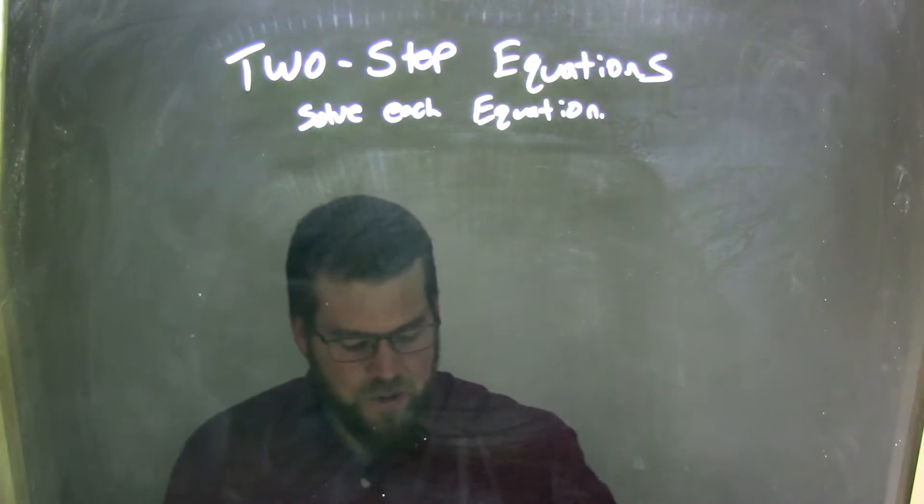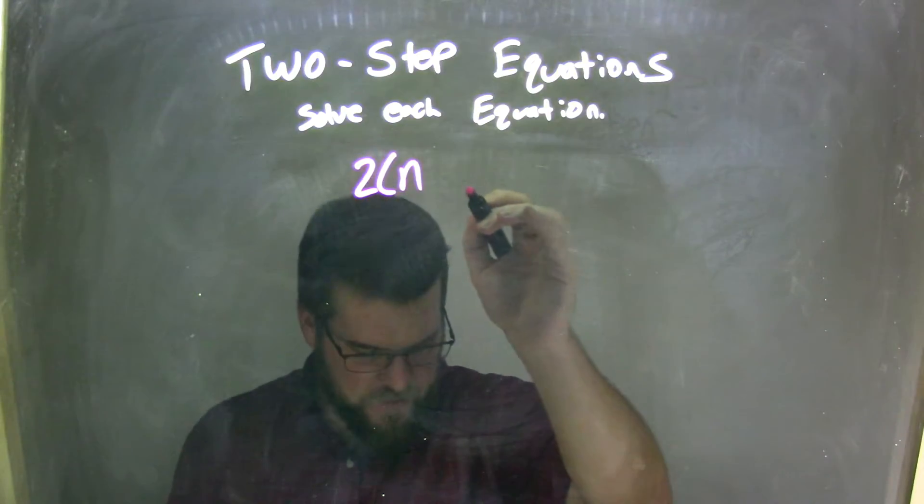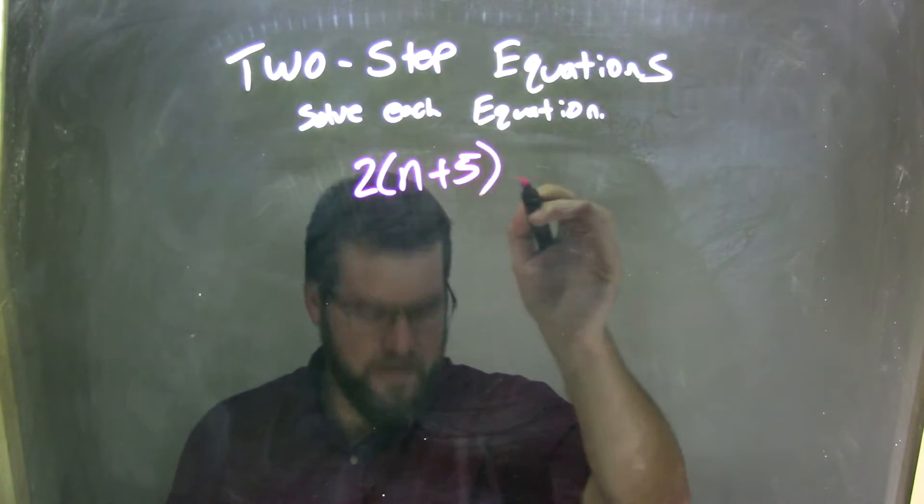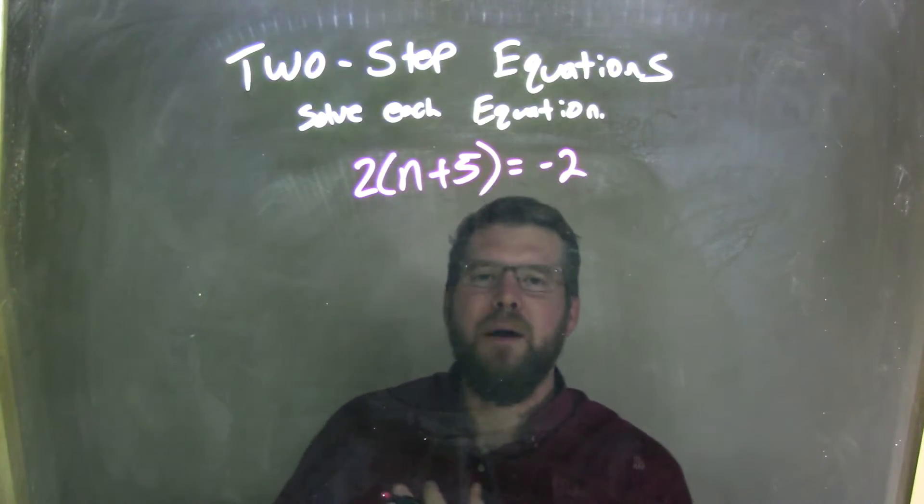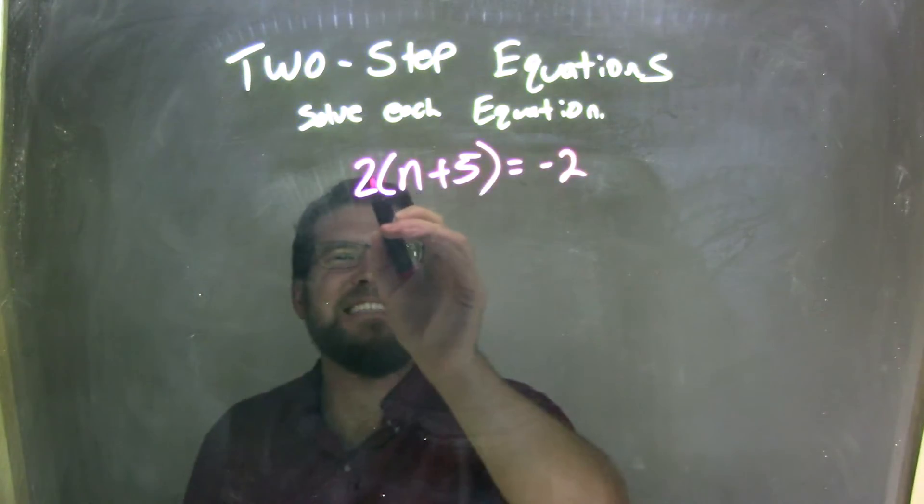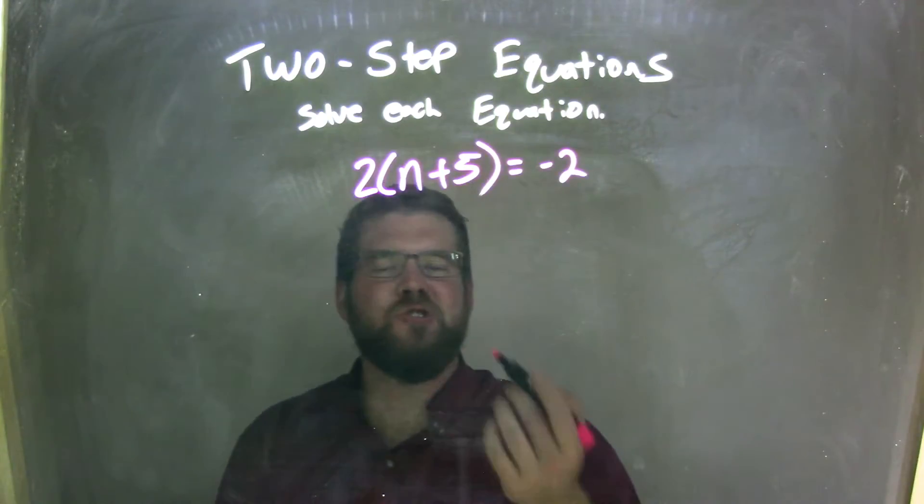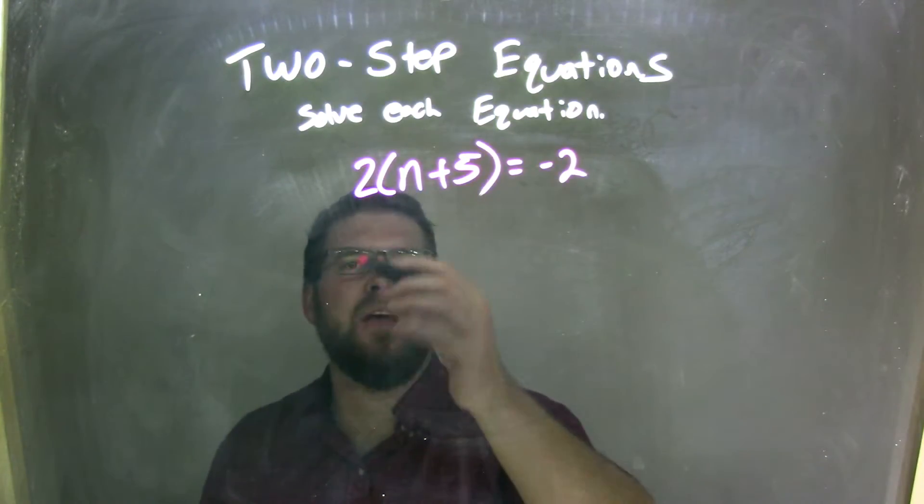If I was given this equation, 2 times n plus 5 equals a negative 2, well, my first step here is I see that 2 is on the outside, and that's multiplication, so I want to get rid of that outside of parentheses.